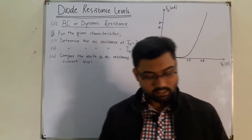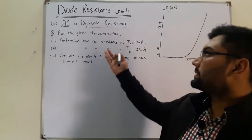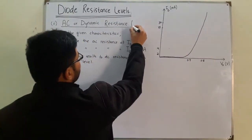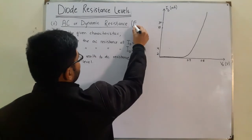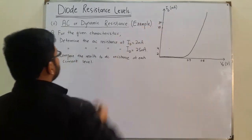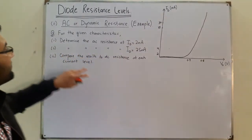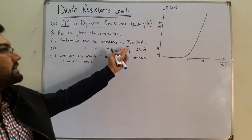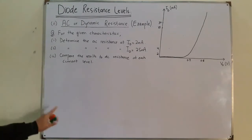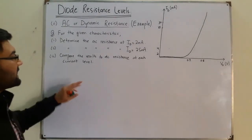Bismillahirrahmanirrahim, Assalamu Alaikum. Salah Khan here, and today we have an example on the topic of AC or dynamic resistance. In this question, for the given characteristics curve, we have to determine the AC resistance at 2 milliampere and 25 milliampere, and then find the DC resistance at each level and compare them.